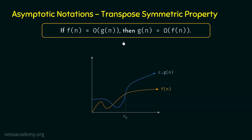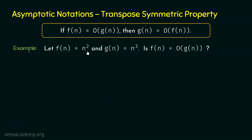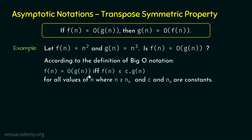Let's try to prove this mathematically as well. For the mathematical proof, we will take a simple example. Let F(n) = n² and G(n) = n³. Can we say F(n) is O(G(n))? Let's apply the definition of big-O notation: F(n) is O(G(n)) if and only if F(n) ≤ C·G(n) for all values of n where n ≥ n₀, and C and n₀ are constants. Let's try to satisfy this inequality to show that F(n) is O(G(n)).